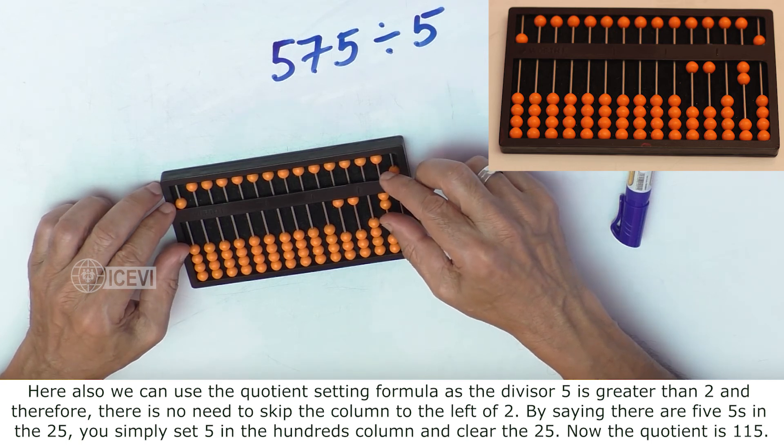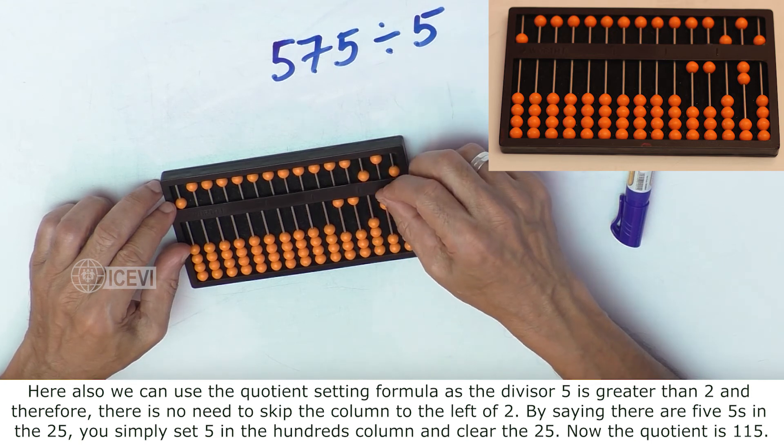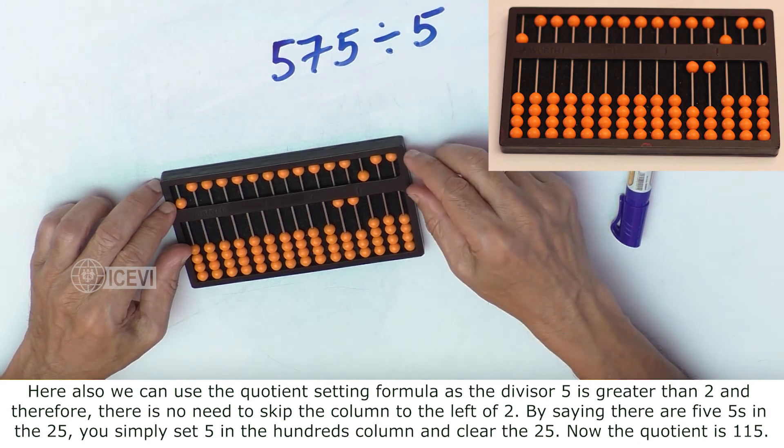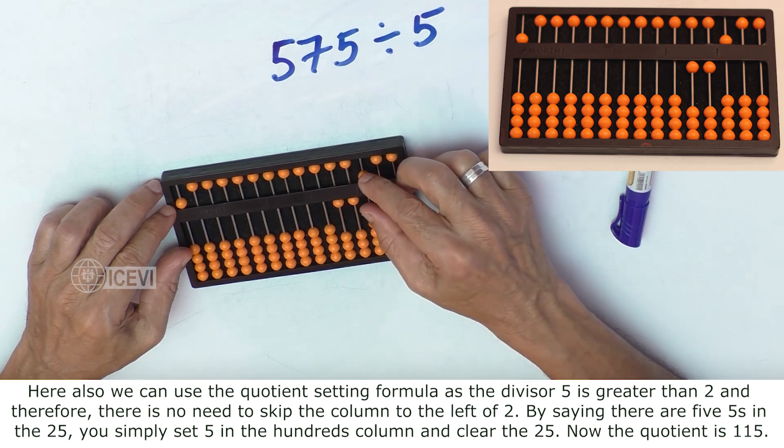you simply set 5 in the hundreds column and clear 25 from the Abacus. Now, the quotient is 1, 1, 5.